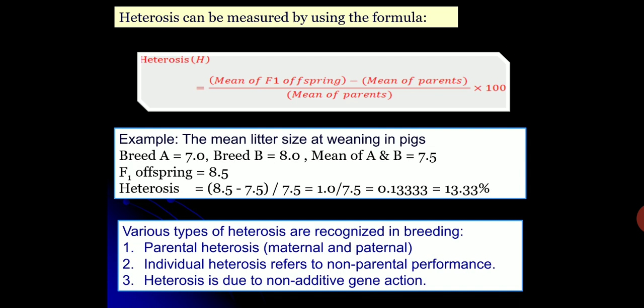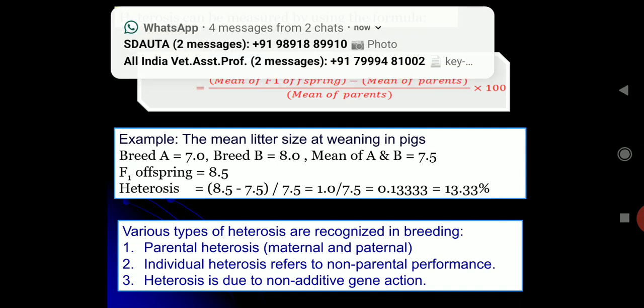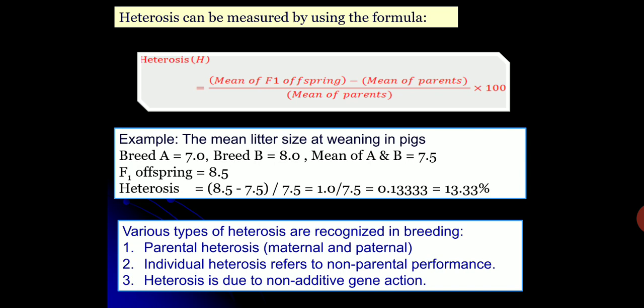There are many types of heterosis recognized in animal breeding. The first is parental heterosis, which consists of both maternal and paternal heterosis — heterosis achieved due to mother effect or father effect. Another is individual heterosis, which refers to non-parental performance where the performance of the parent is not considered. The third is heterosis due to non-additive gene action. We will see these types in more detail in coming slides.